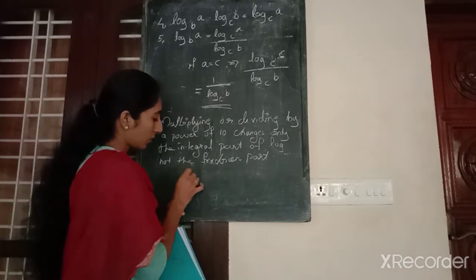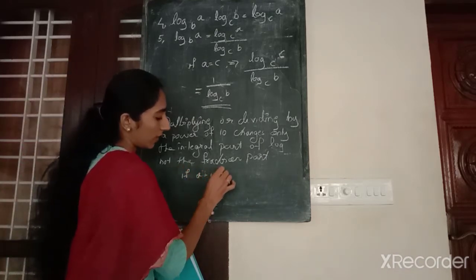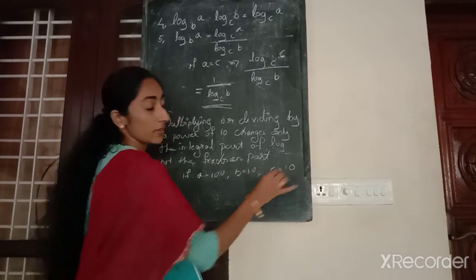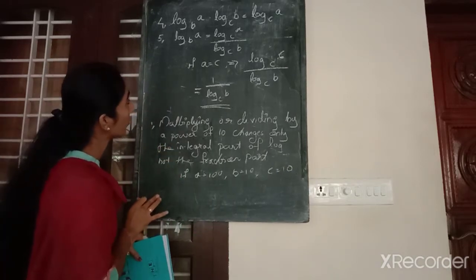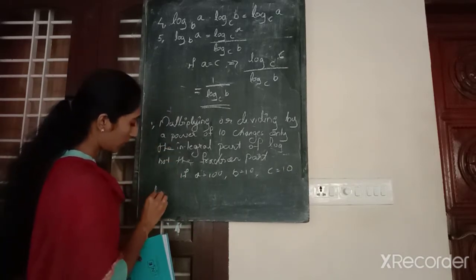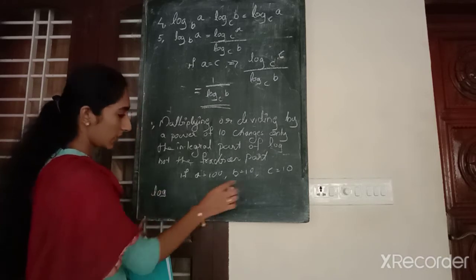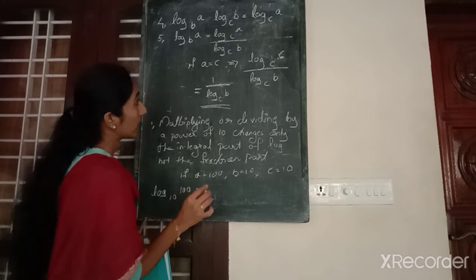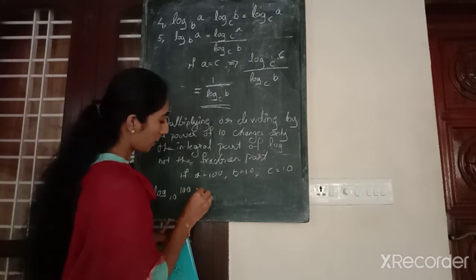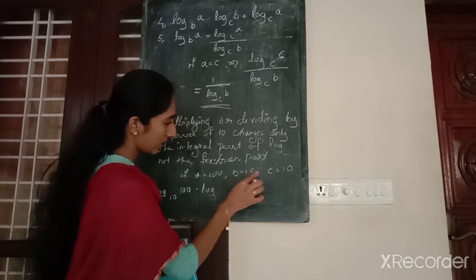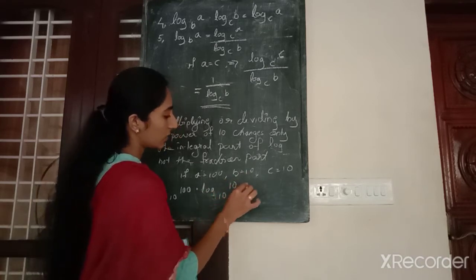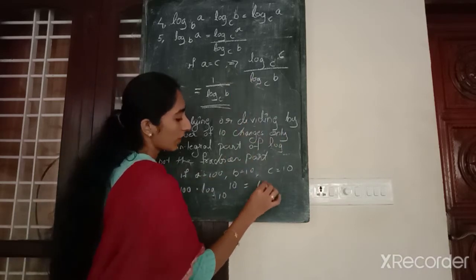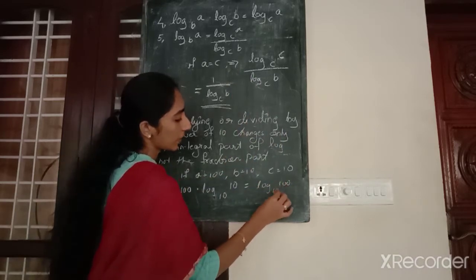If we consider A equal to 100, B equal to 10 and C equal to 10, then logarithm of A base B is logarithm of 100 base 10, into logarithm of B base C. Logarithm of A is 100, base 10.